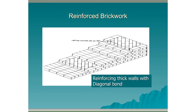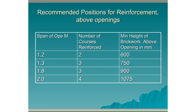Here is a method used for reinforcing thick walls using diagonal bond. A standard stretcher bond is used and then on alternate courses we have the introduction of diagonal bond. There is also a table showing recommended positions for reinforcement above openings. For example, if you had an opening with a span of 1.2 metres, the recommendation is to reinforce two courses of brick above that opening with a minimum of 600 millimetres of brickwork built above the opening.